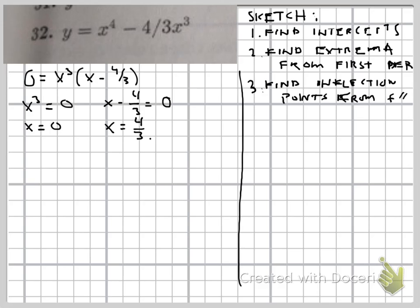We have that x is equal to zero or that x could equal 4 thirds. So we have two points already. We have the point zero comma zero and the point four thirds comma zero.